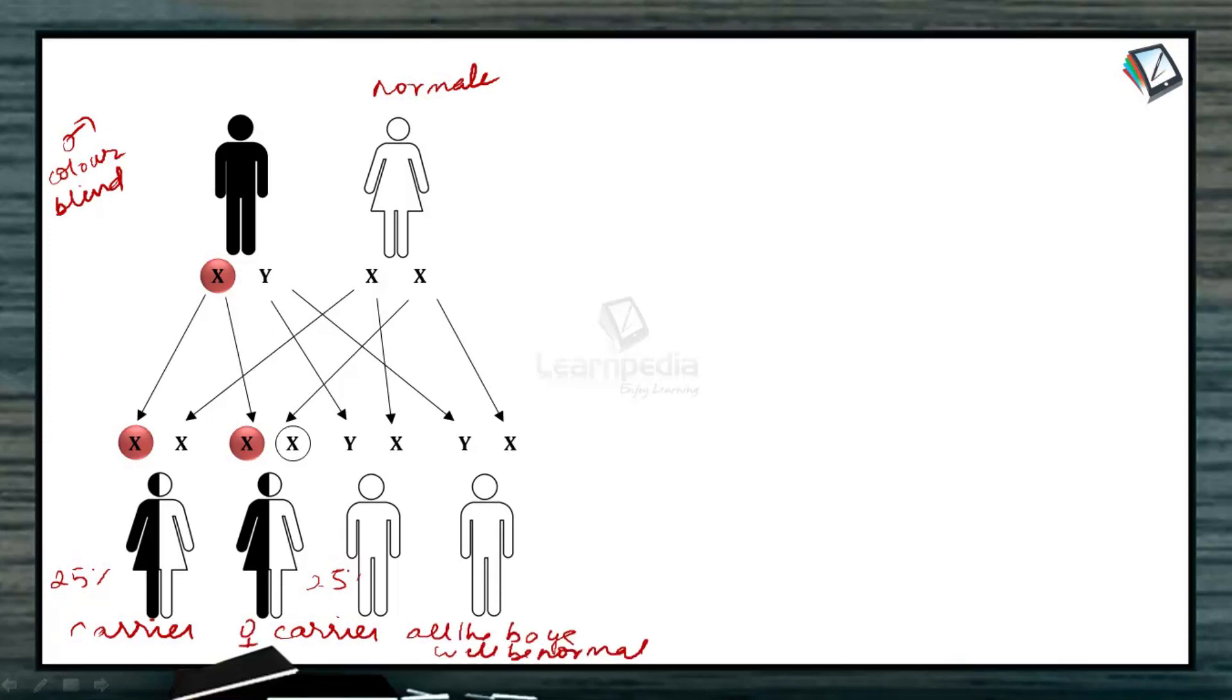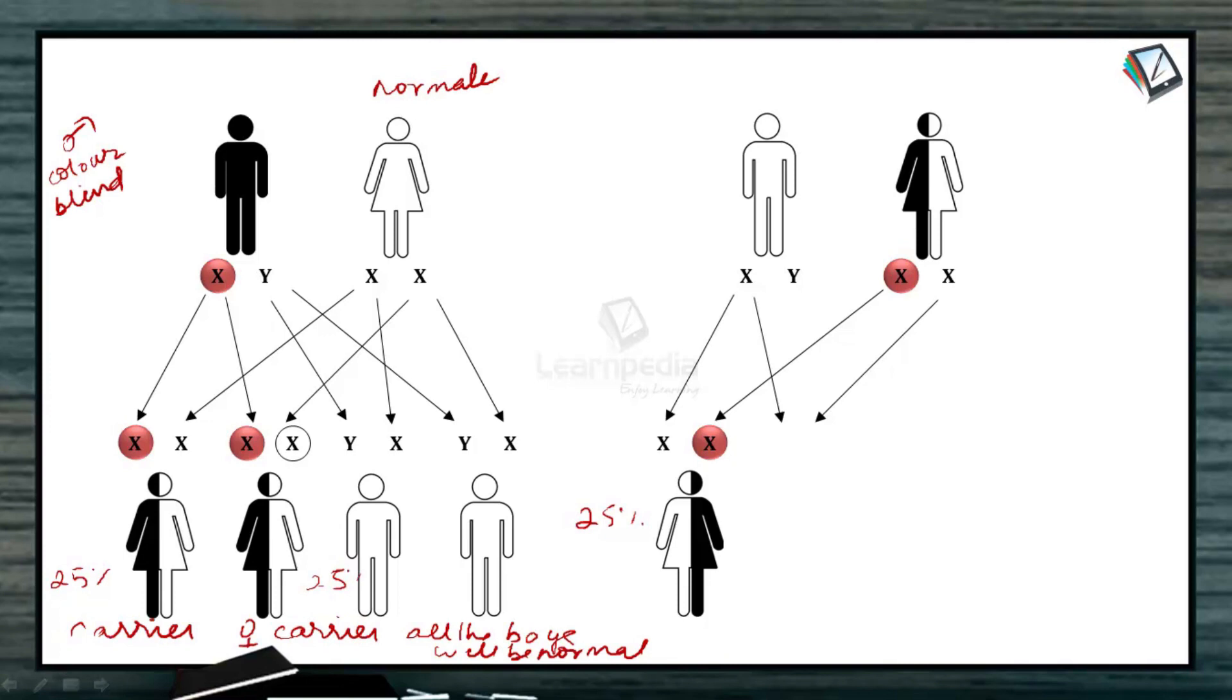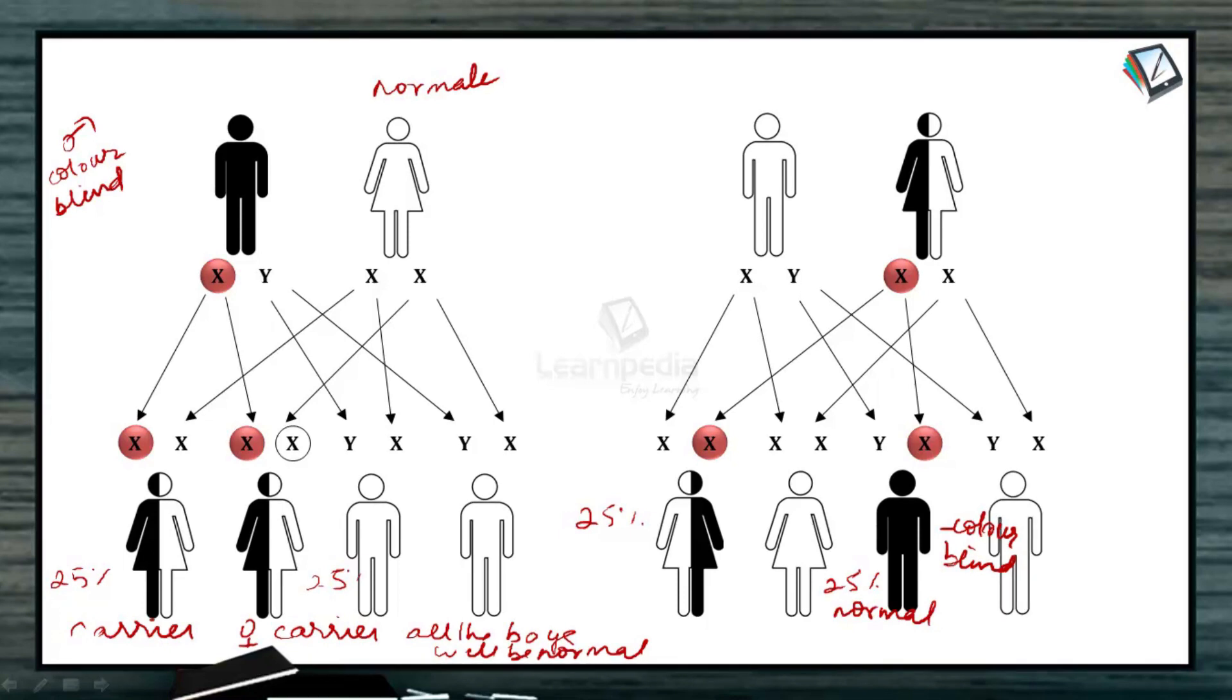So here we have to conclude if the father is color blind and mother is normal, then the girls born to them will be carriers of this particular disease. Then suppose the father is normal and the mother is a carrier, then what happens? Then the girl will be carrier, I should say 25% carrier, and then here 25% normal. So this person, the boy born to them will be color blind, and there is a possibility that they get a normal boy. So there is a 25% chance of the girl being carrier and 25% the girl being normal and 25% that boy being a color blind and normal boy. So it all depends on this person. Father is normal and the mother is a carrier.